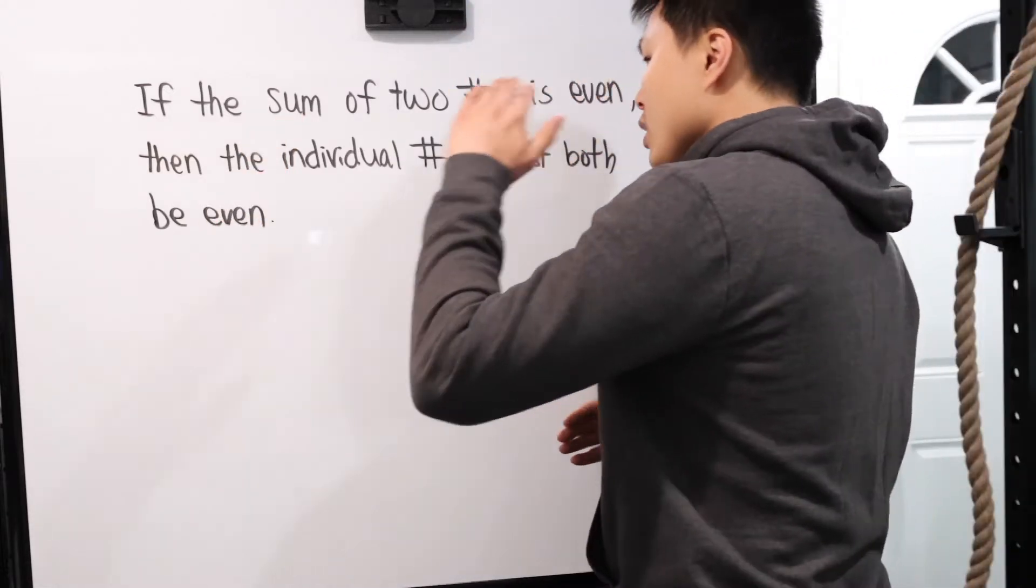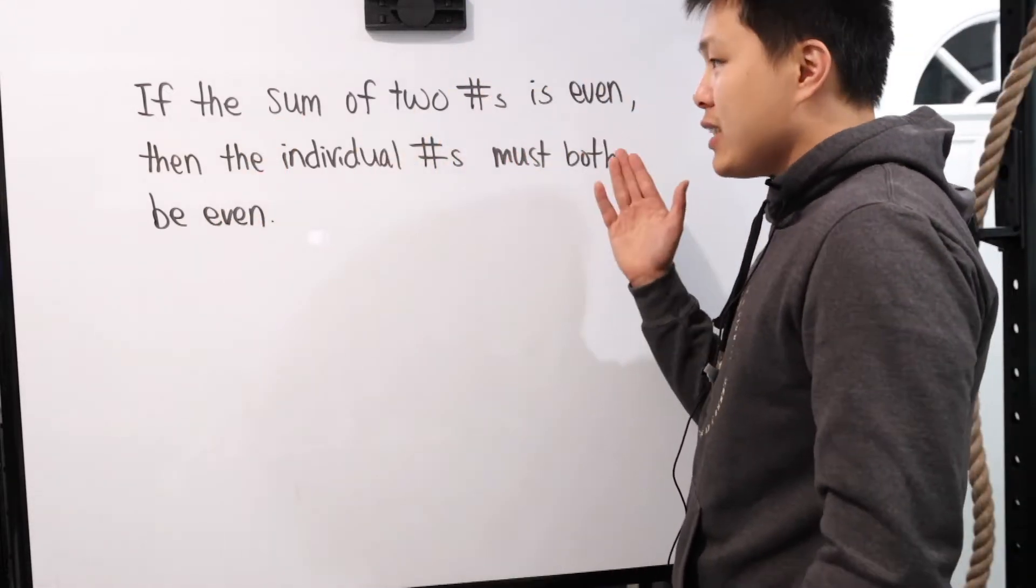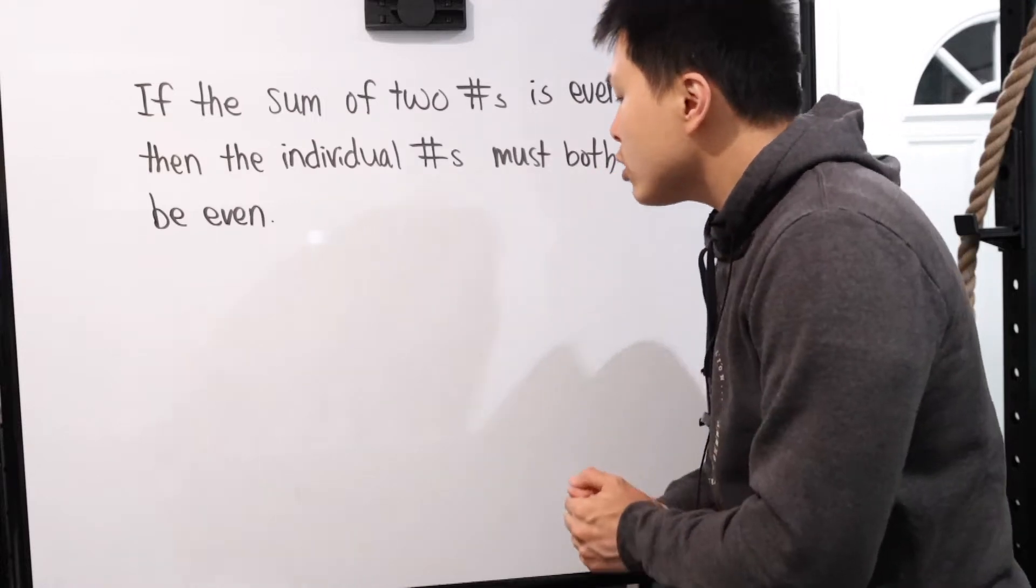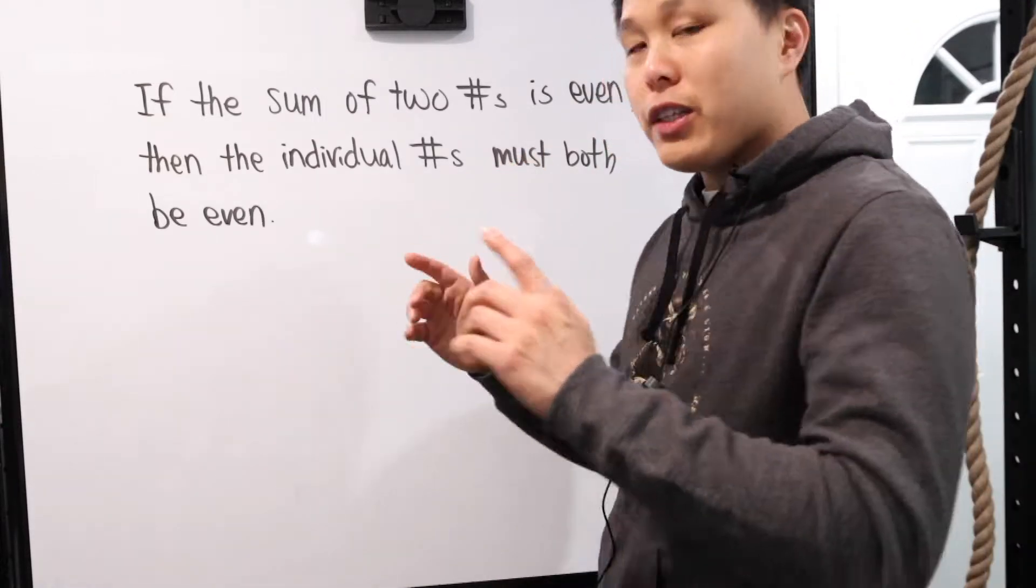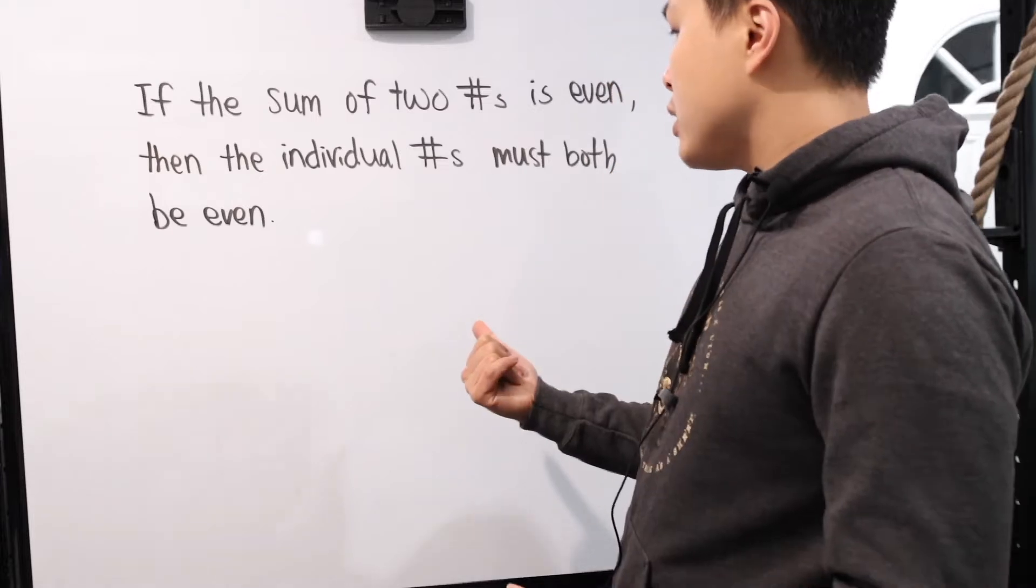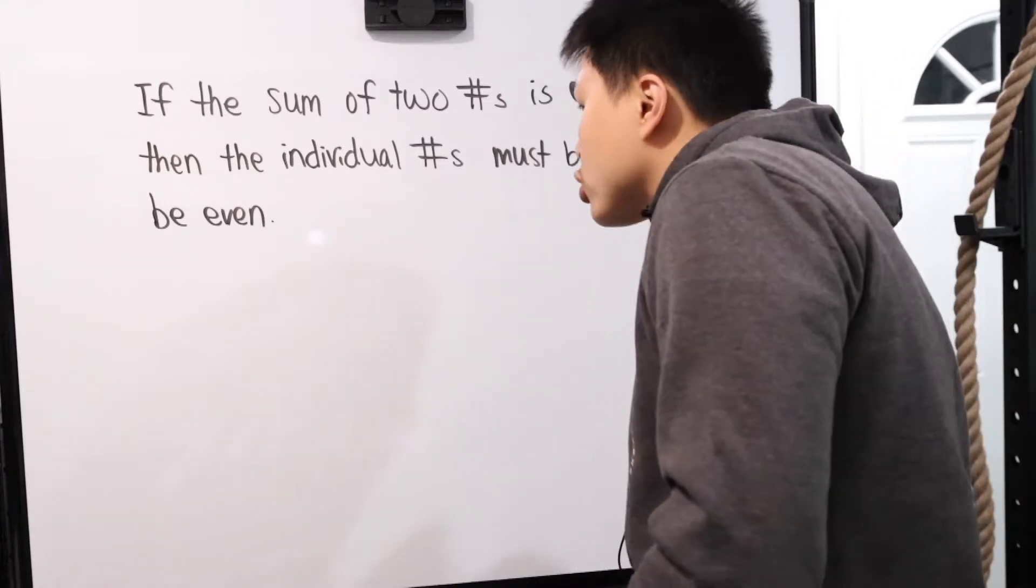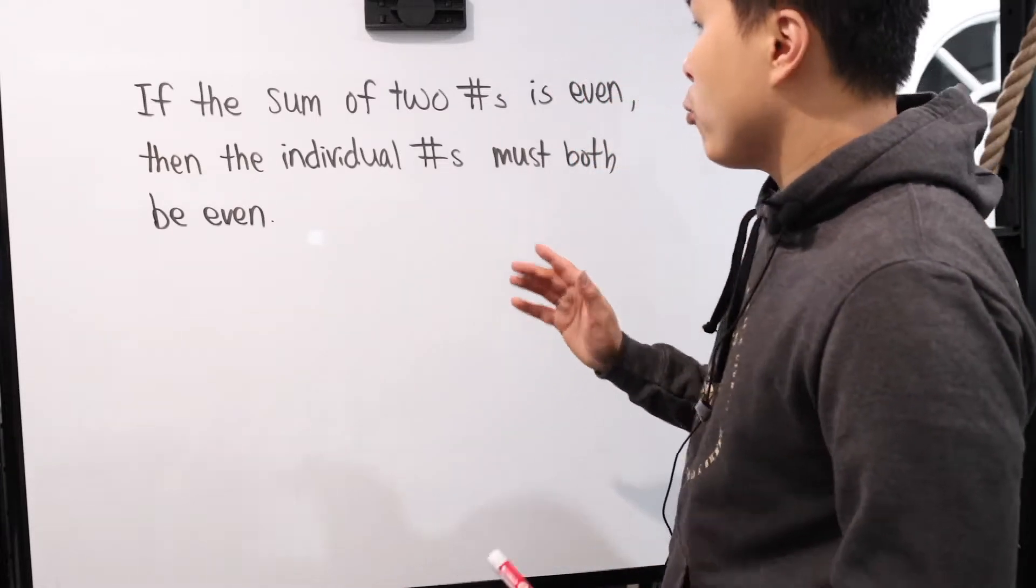So let's look at this. If the sum of two numbers is even, then the individual numbers must both be even. At this point, hopefully you guys realize this is a false statement. In order to show that, all we have to do is come with an example.